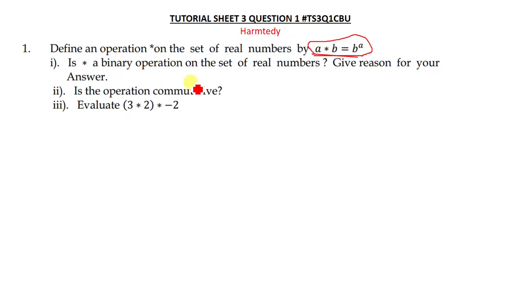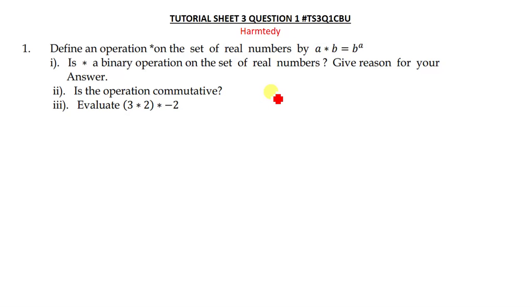Whenever you find this question, you first need to understand what real numbers are. Real numbers are simply the set of all rational and irrational numbers. When you combine rational and irrational numbers, you get a set called the set of real numbers.